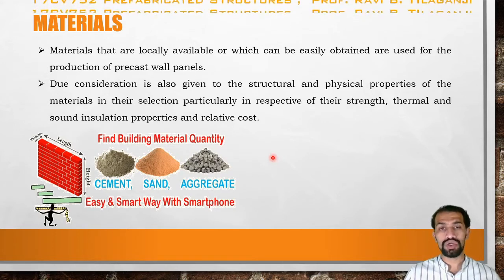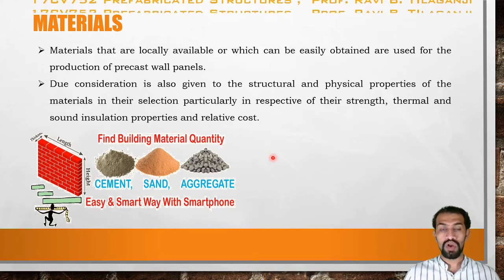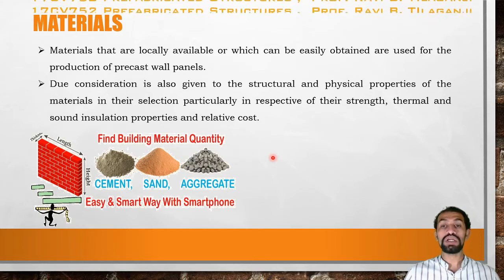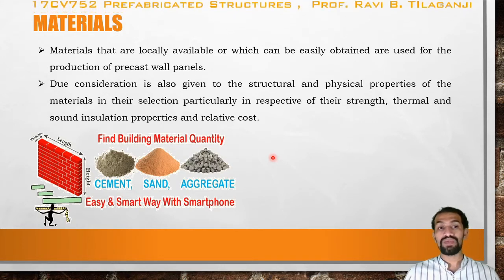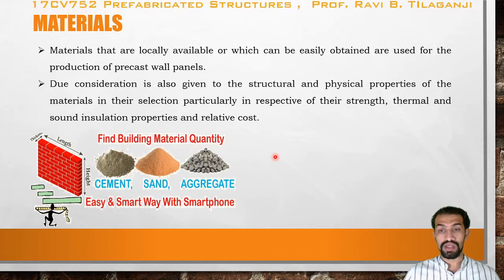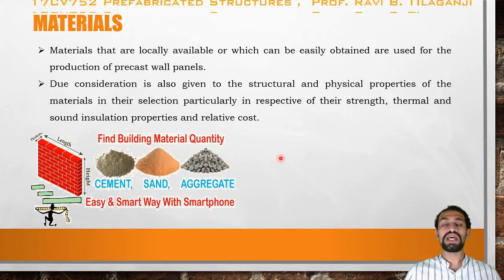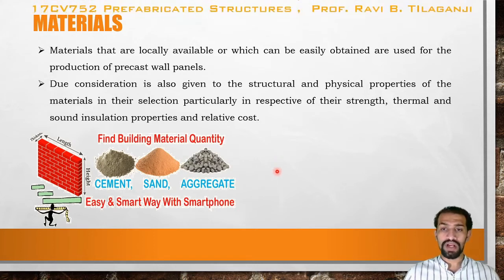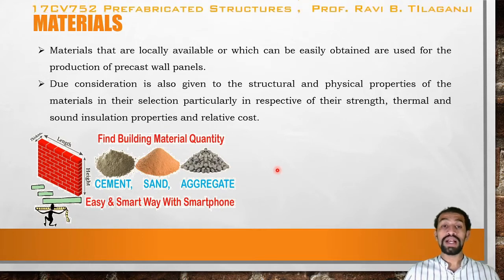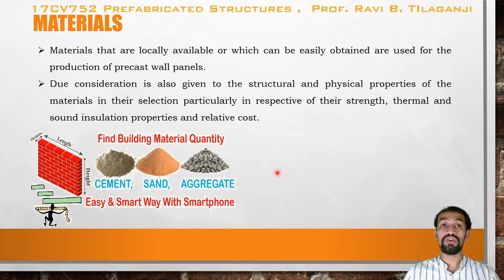Due consideration is given to the structural and physical properties of the materials used. If the materials are not good enough or cannot sustain the load they are required to carry, they will not be considered as construction materials. This applies similarly to both normal and prefabricated construction. Properties considered include strength, thermal insulation, sound insulation, and economy — that is, the relative cost of the materials.